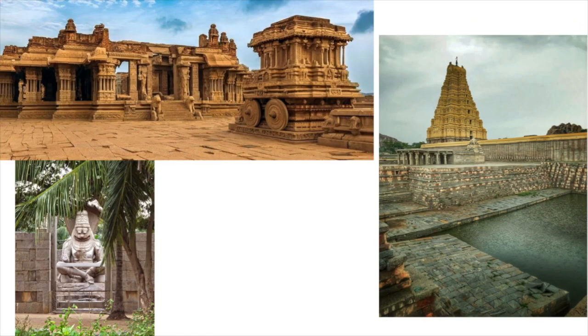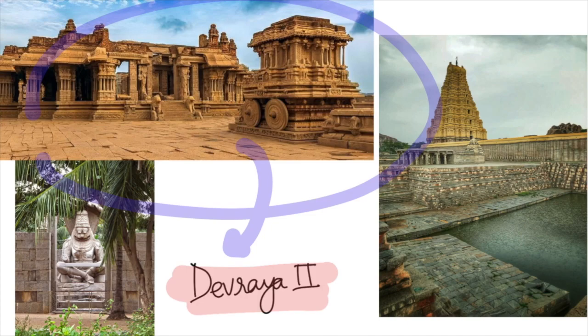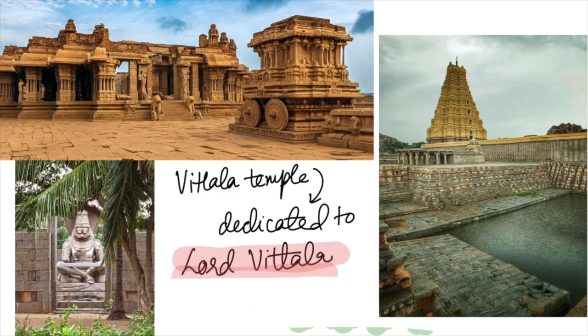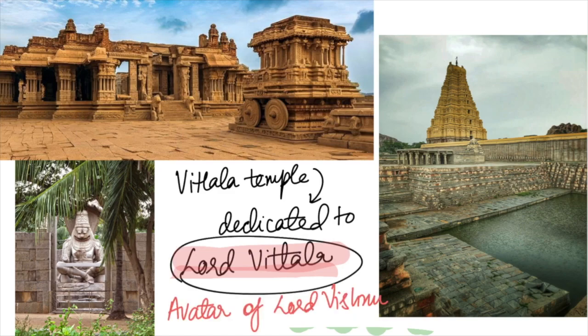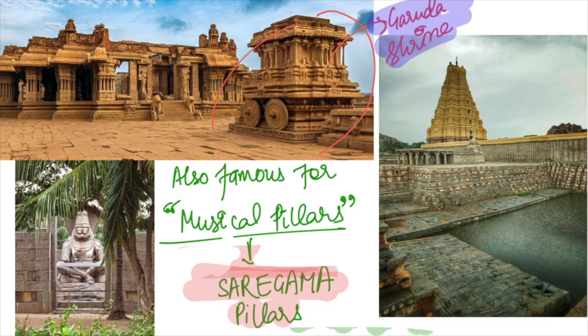The first important monument at Hampi is the Vithala Temple, said to be built by King Deva Raya II and later expanded by Krishnadeva Raya. This temple is dedicated to Lord Vithala, an avatar of Lord Vishnu. It has a Garuda shrine in the form of a stone chariot, and is also famous for its musical pillars, known as Saregamapa pillars.